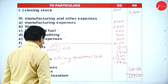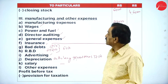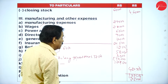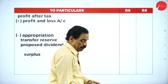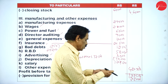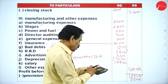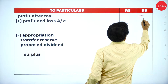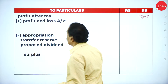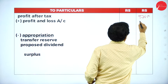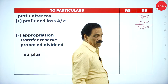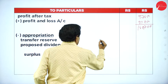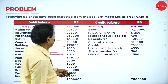Profit before taxation is ₹1,22,450. Provision for taxation is ₹25,000. Deducting: profit after taxation = ₹97,450. Add profit and loss account balance from last year: ₹51,250. Total becomes ₹1,48,700.